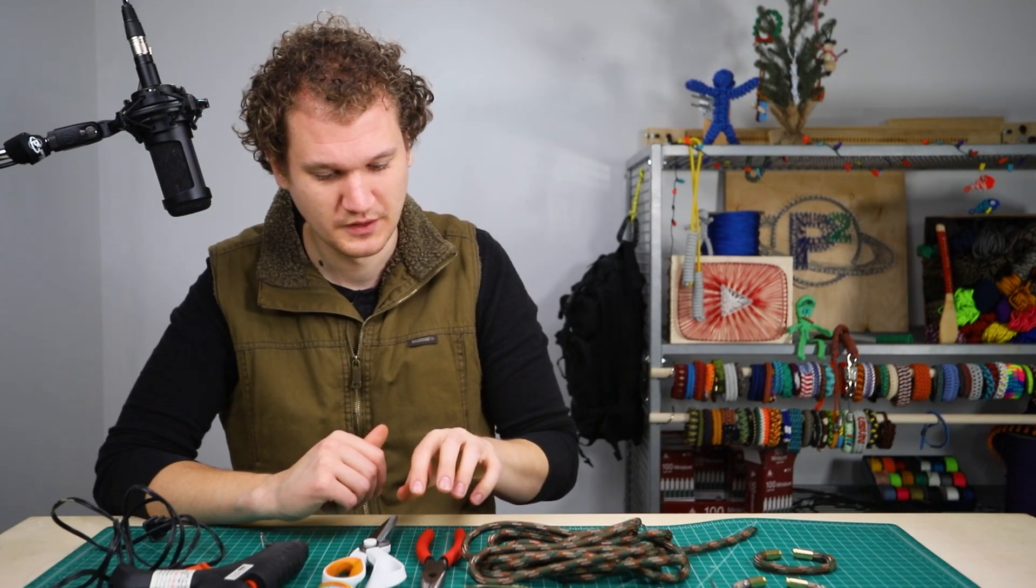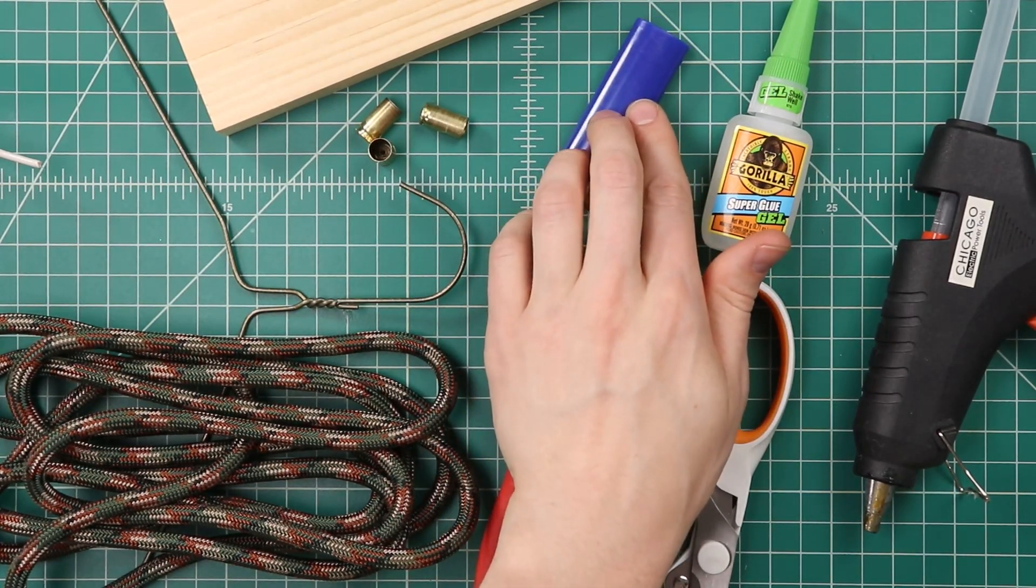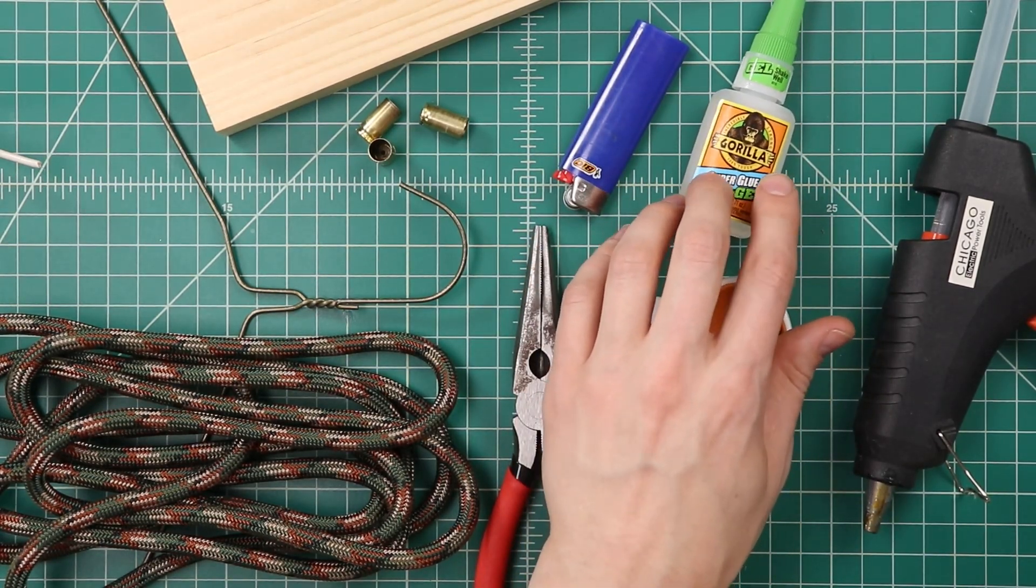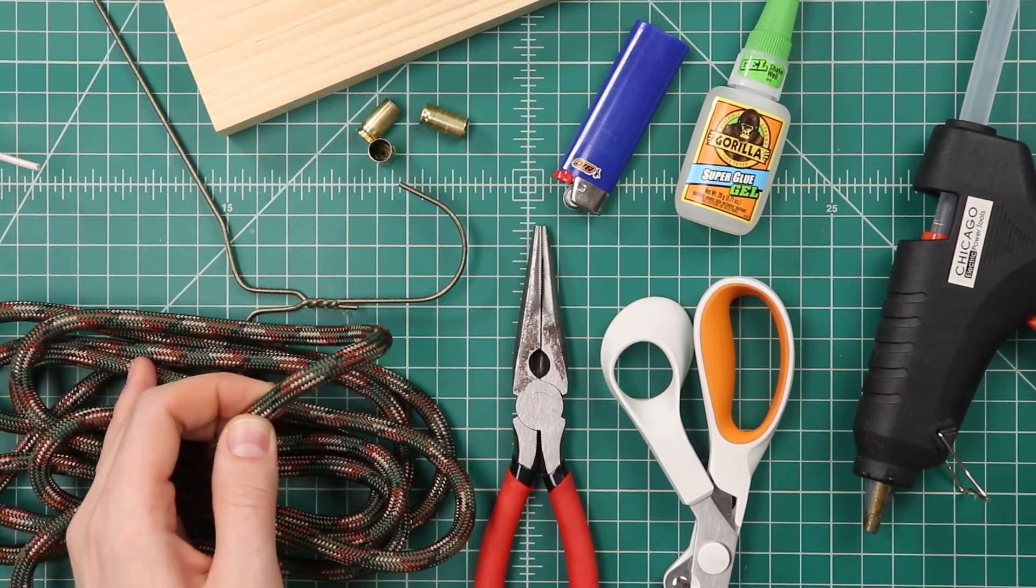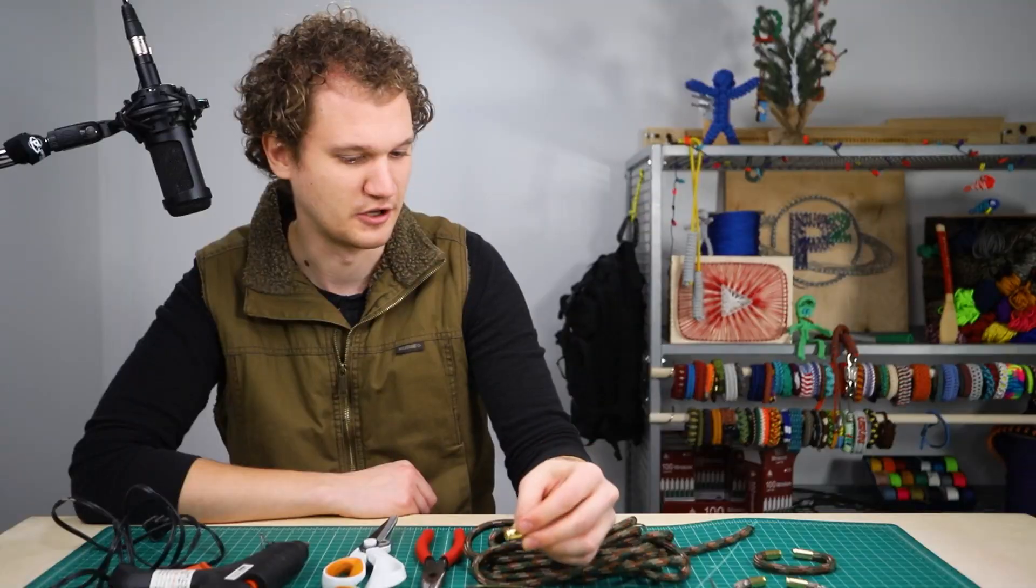For tools, we need pliers to bend the wire, a lighter to melt the ends of the cord, and I like to use super glue to glue them into the shells, but you could also use hot glue. For the cord itself, we're using 5/16" Para-Max. I found that fits nicely inside of a 9mm shell. So with that, let's dive right in.